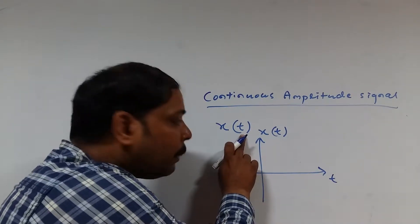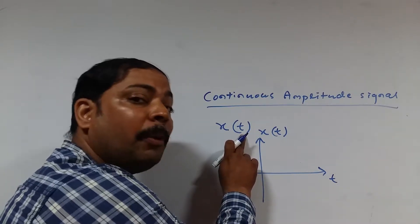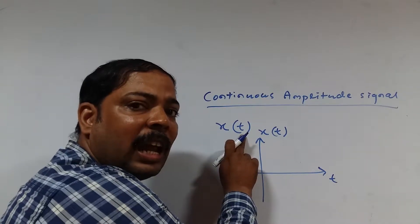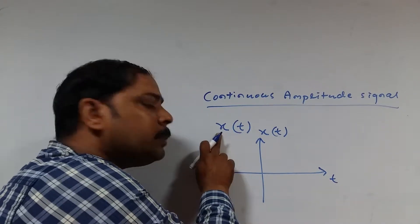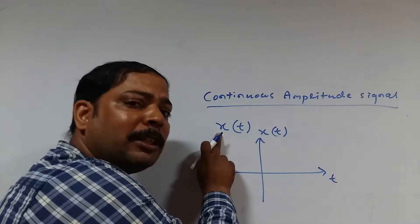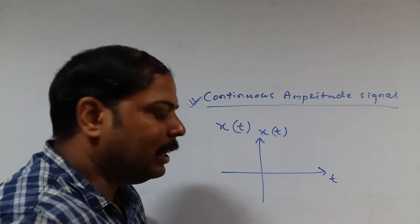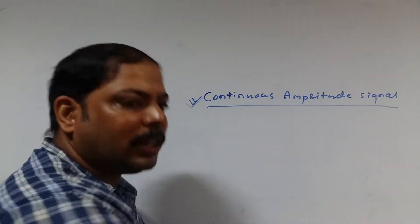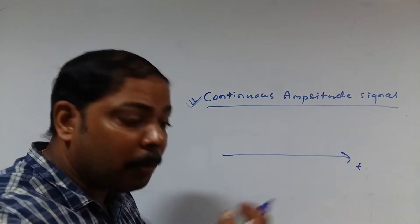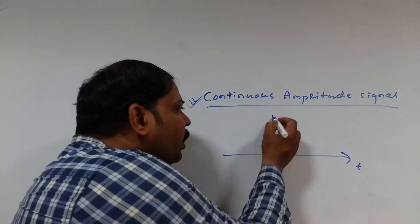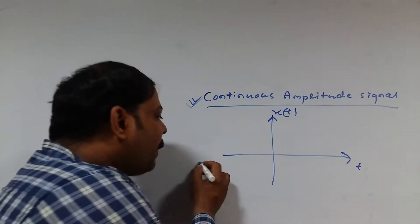This part I have already covered — with respect to time, the signal has two classifications: continuous time signal and discrete time signal. I have already discussed what is basically continuous time signal and discrete time signal. Now let me explain what is basically continuous amplitude signal, because with respect to amplitude it also has two classifications: continuous amplitude signal and discrete amplitude signal. Now let me cover the first part — what is basically continuous amplitude signal. This is very important.